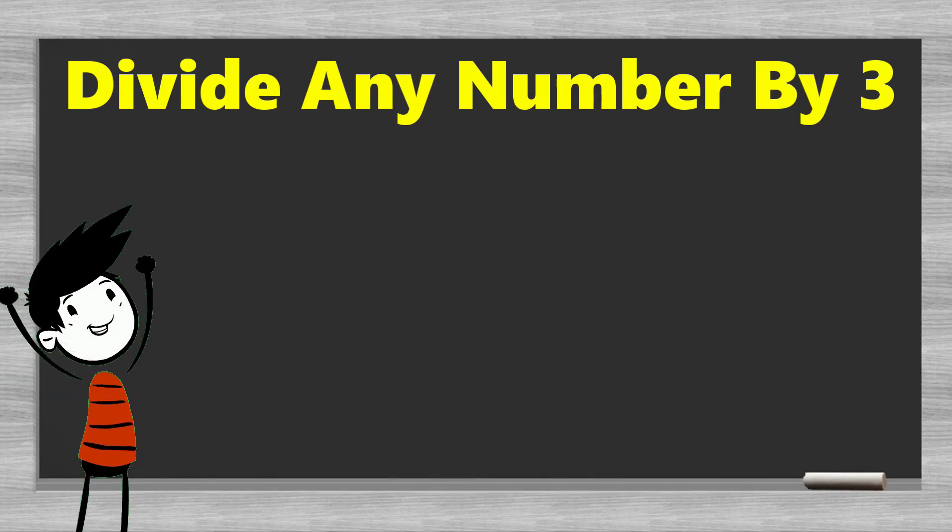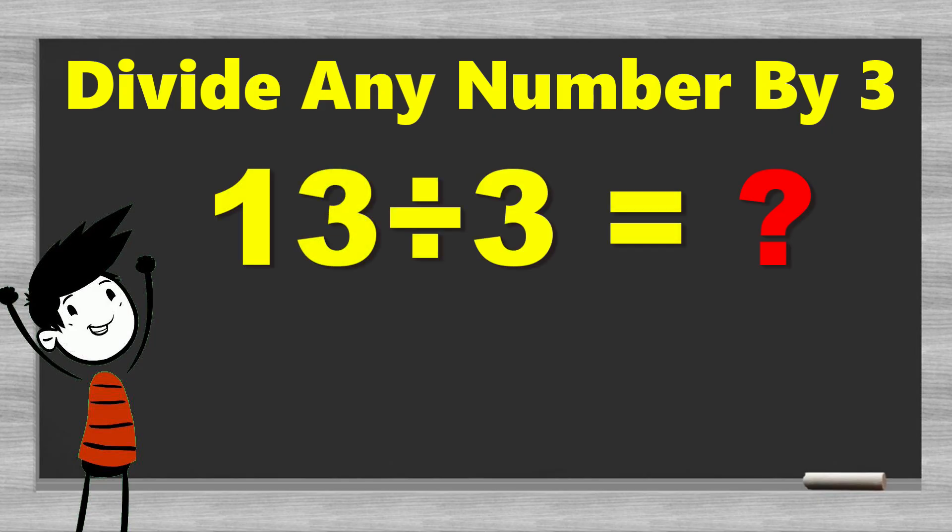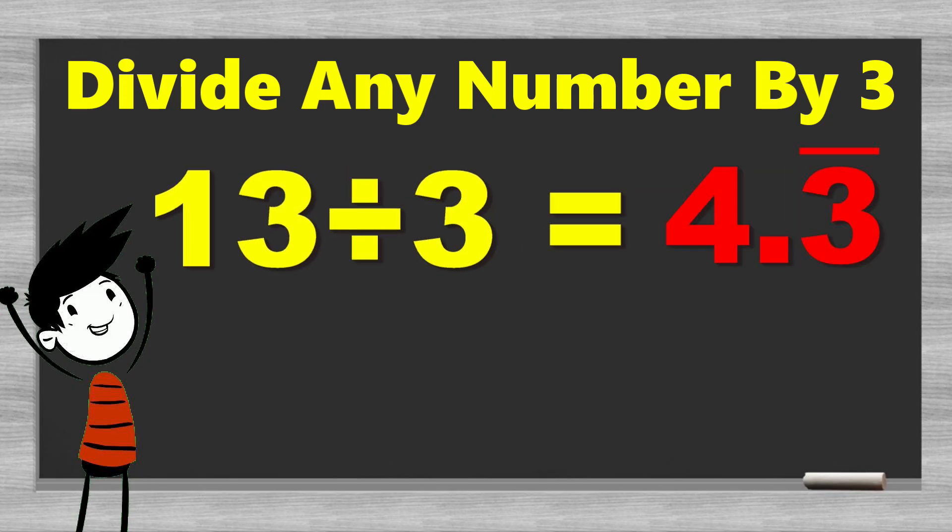So let's take a look at our first example to really get a sense of this trick. 13 divided by 3. And the immediate thing that I want you to notice about this is that 13 is not divisible by 3. This means that if you try to divide 13 by 3, you're not going to get a whole number. There will be some decimals after it. So in order to figure out what these decimals are, we have to use this trick.